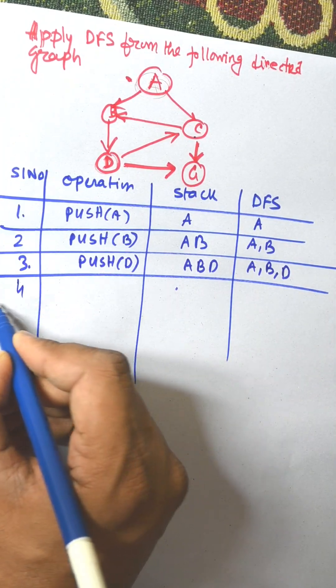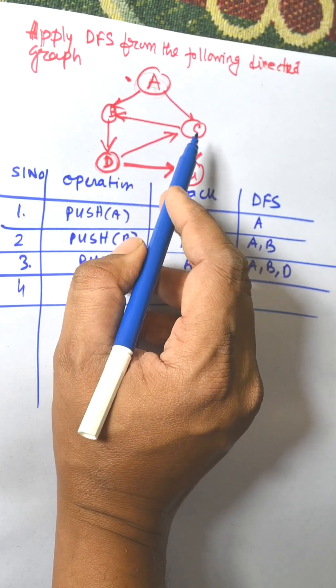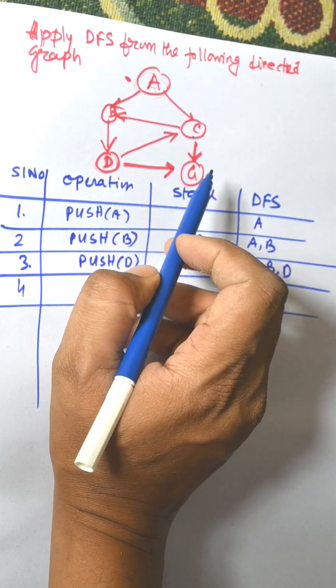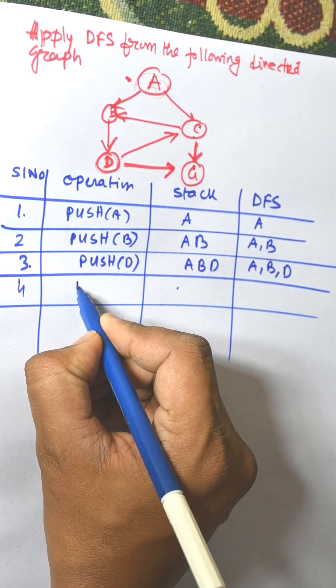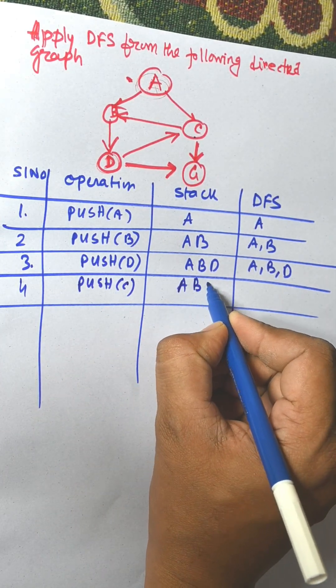From D we can visit either G or C. We need to visit C or G. So we visit C. Stack is A B D C.